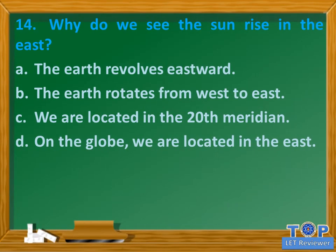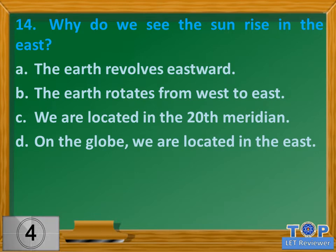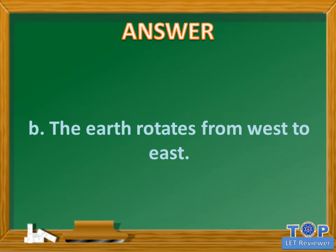Question number 14. Why do we see the sun rise in the east? A. The earth revolves eastward. B. The earth rotates from west to east. C. We are located in the 20th meridian. D. On the globe, we are located in the east. Answer: B. The earth rotates from west to east.